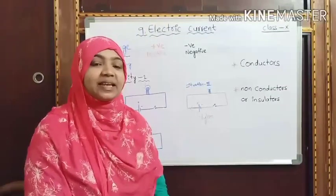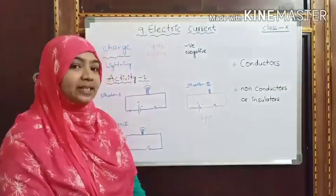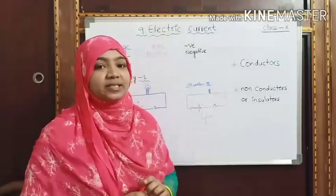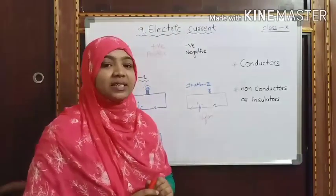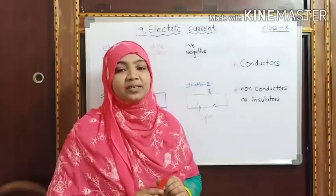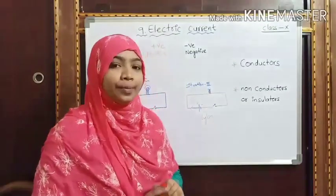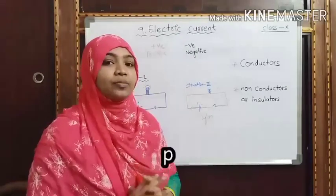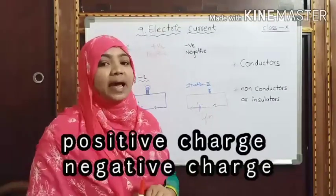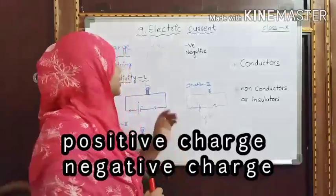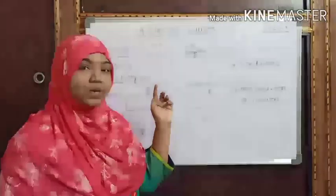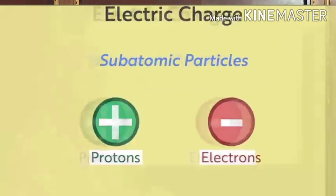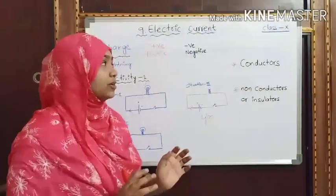In previous classes, we learnt about electric current. Electric current is simply a motion of charges. So what is charge? Charge is a property of a particle. Generally, charge is in two forms: positive charge and negative charge. Positive charge is carried by protons and negative charge is carried by electrons.